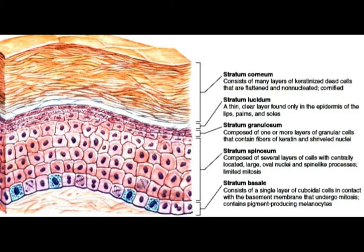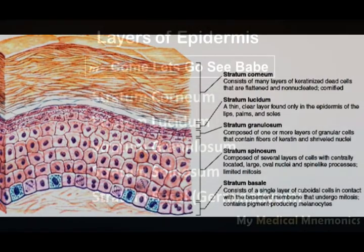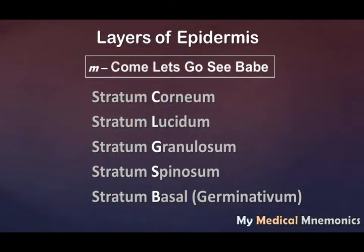So how are we going to remember the names of these layers of epidermis? It's a simple mnemonic: 'Come Let's Go See Babe.' This five-word sentence is going to tell you the names of the five layers. We don't need to remember 'stratum' — we are going to remember the second word: corneum, lucidum, granulosum, spinosum, basale.